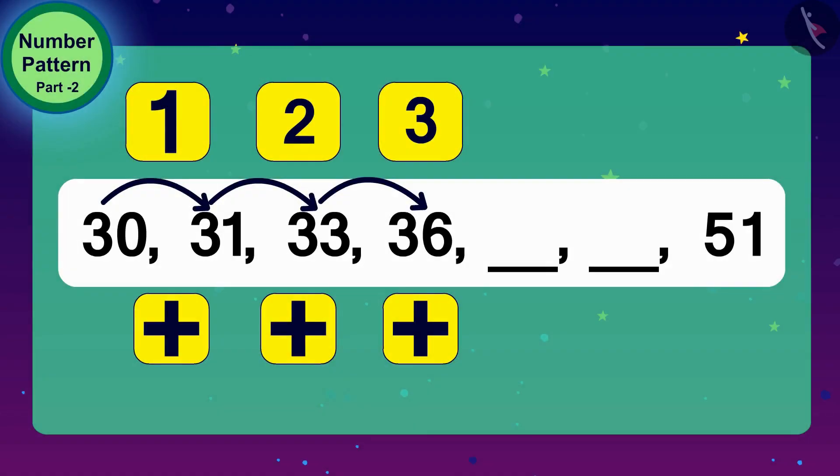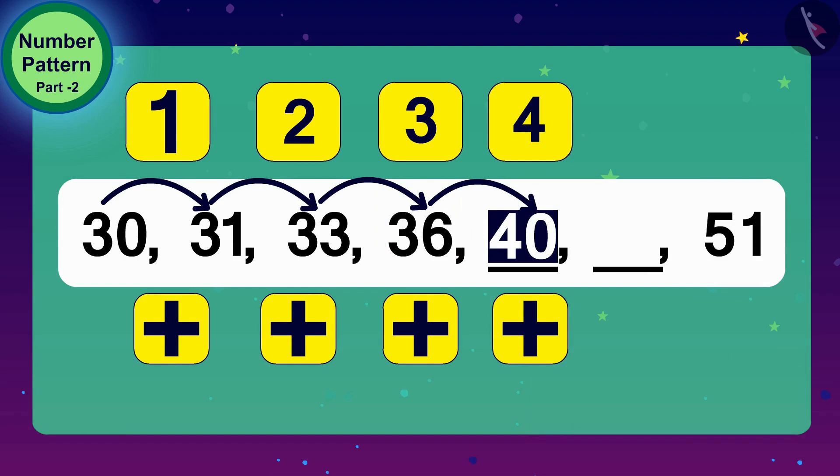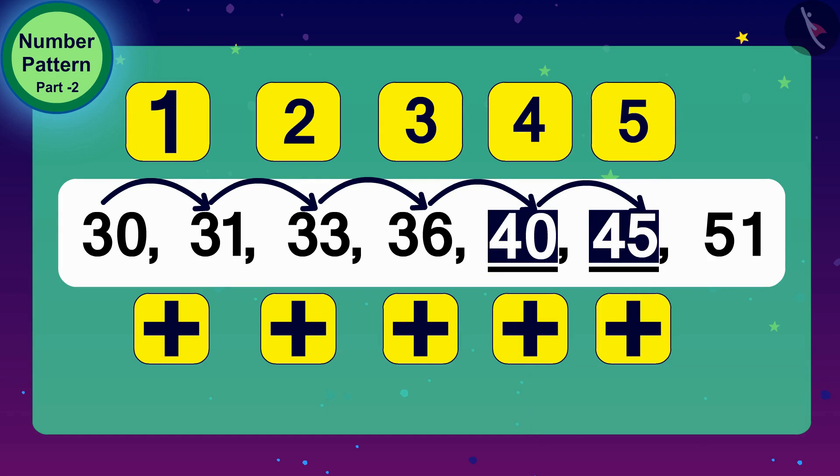So, what do we need to do now to pursue this number pattern? We have to add 4 to 36. This gives us what? 40. And what shall we do to get the next number? That's correct! Add 5 to 40. Adding 5 to 40, 45. Oh, wow! We filled in the blanks of this increasing number pattern.